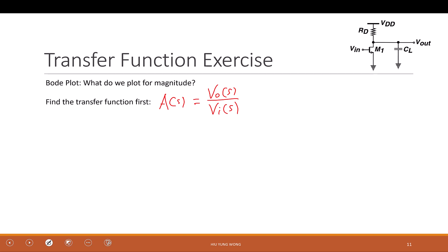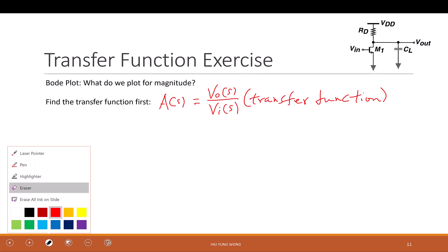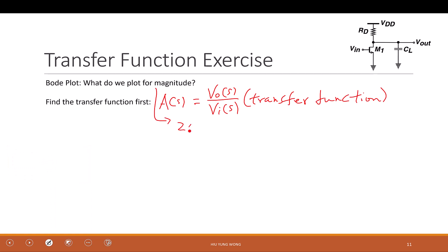The transfer function tells us: given this input voltage, what output voltage do I get? Output divided by input is the gain. In general, the transfer function depends on frequency and can be a complex number — it captures more information, telling us at zero hertz how it responds, at 100 gigahertz how it responds, all in one transfer function. We usually plot this on Bode plots. What do we plot? We plot 20 log of the magnitude versus log of the frequency.